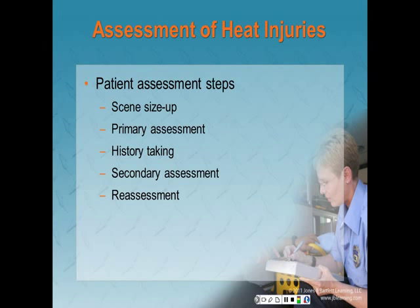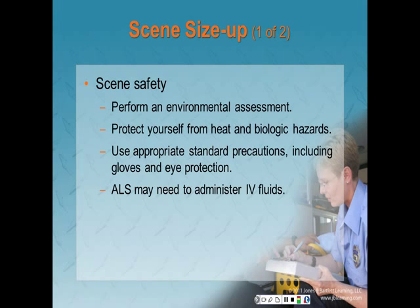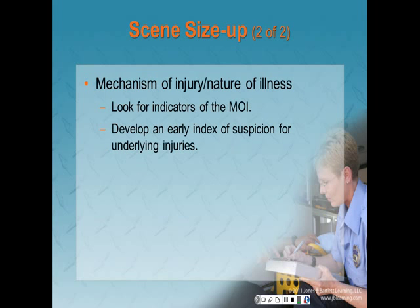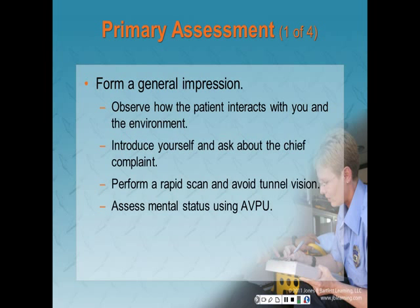For assessment of heat emergencies, we perform the same steps as for cold. For scene safety, perform your environmental assessment and protect yourself from heat and biologic hazards. Use appropriate standard precautions including gloves and eye protection. You may need the assistance of advanced life support for administration of IV fluids. Develop an early index of suspicion for underlying injuries. For primary assessment, form your general impression and observe how the patient interacts with you and the environment. A heat illness may be the primary or secondary condition. Assess the patient's mental status using the AVPU scale — the more altered the mental status, the more serious the heat problem.